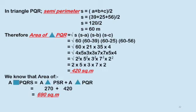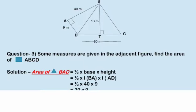Now you have found the area of triangle PSR and triangle PQR. Area of quadrilateral PQRS equals area of triangle PSR plus area of triangle PQR, which is equal to 270 plus 420, giving 690 square meter. Therefore area of quadrilateral PQRS is equal to 690 square meter.